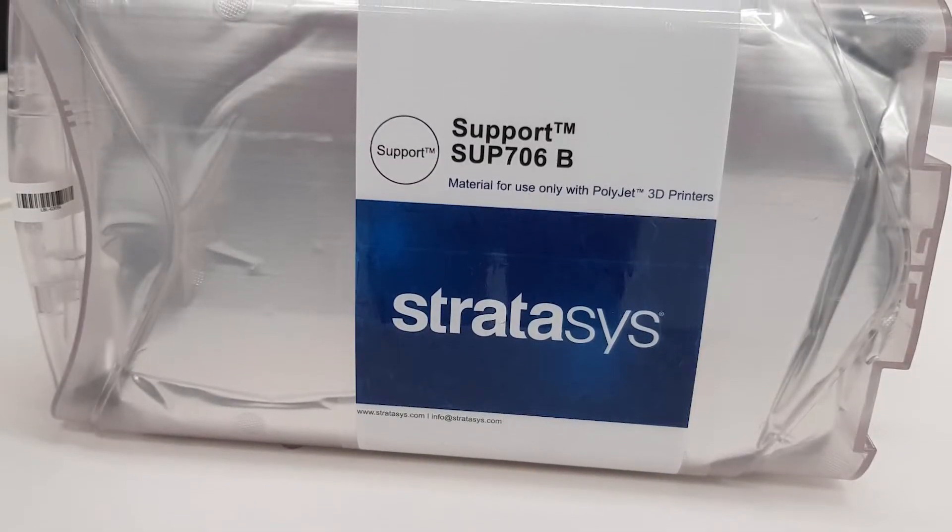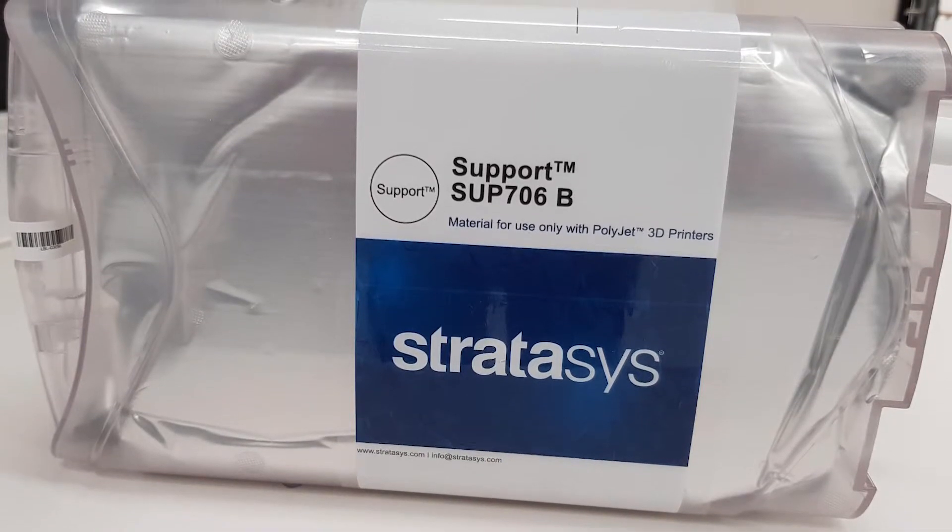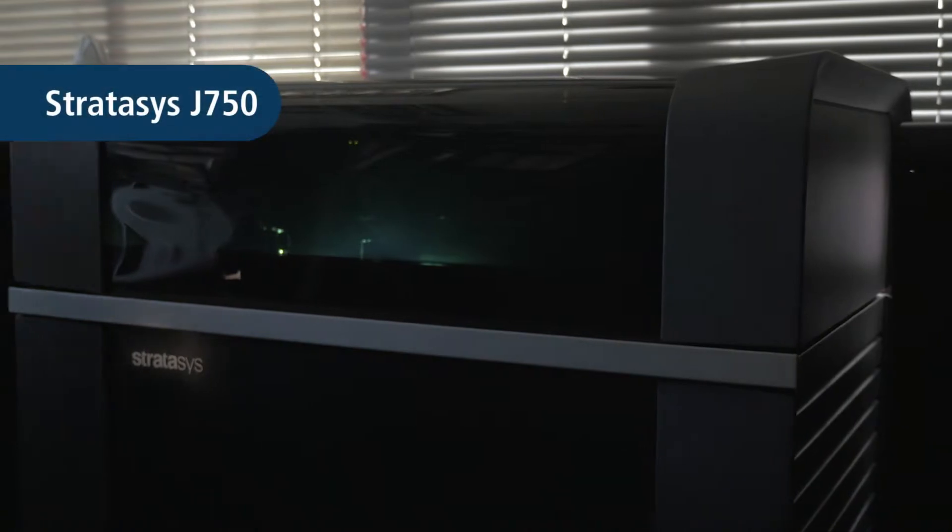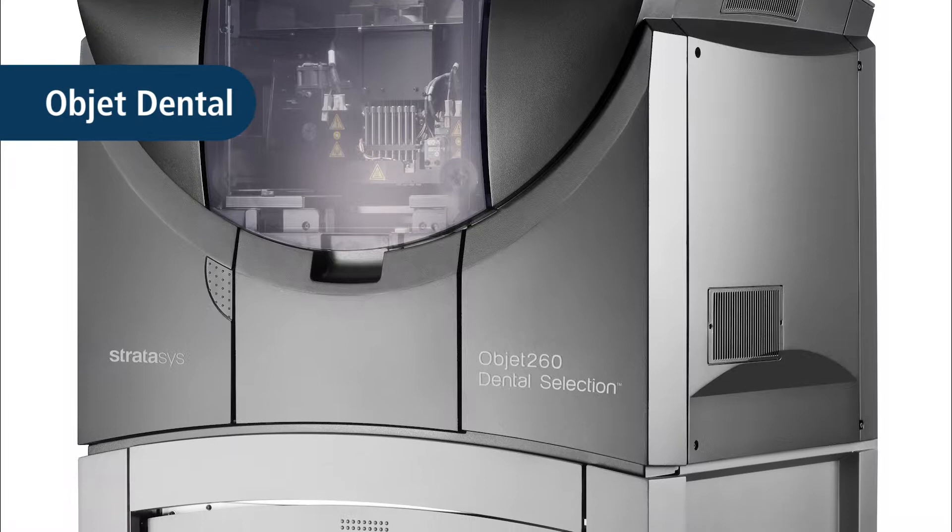Stratasys PolyJet new SUP706B brings high productivity and design freedom to Stratasys 3D printing solutions. It is available on Stratasys J750 family, Connex 3 series, Object 30 family and Object Dental Selection series.